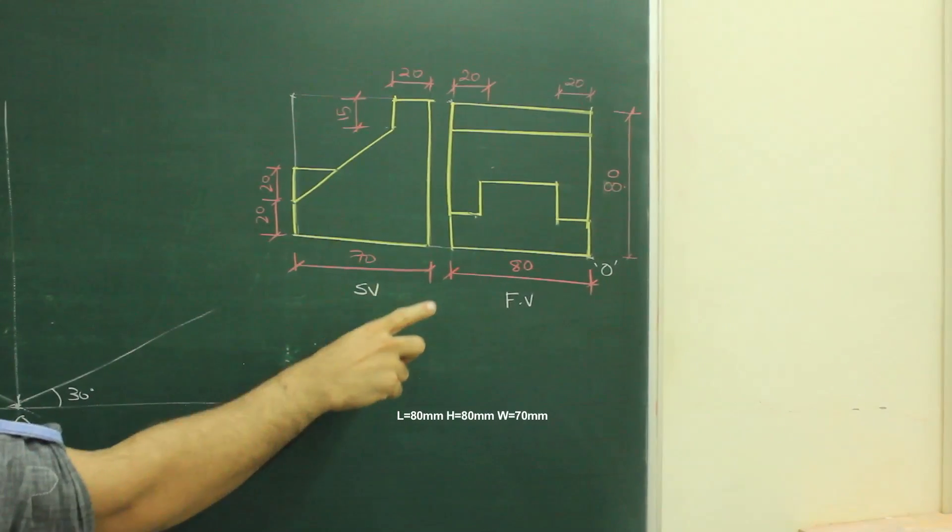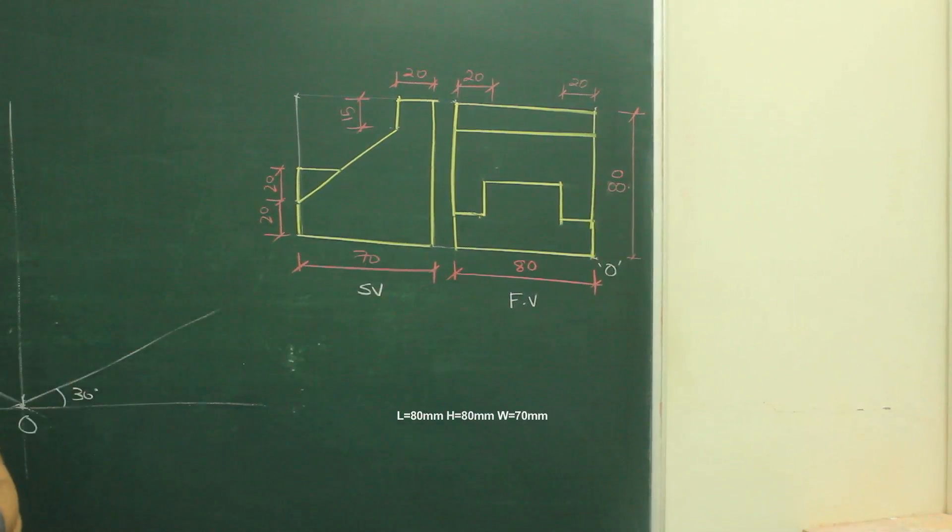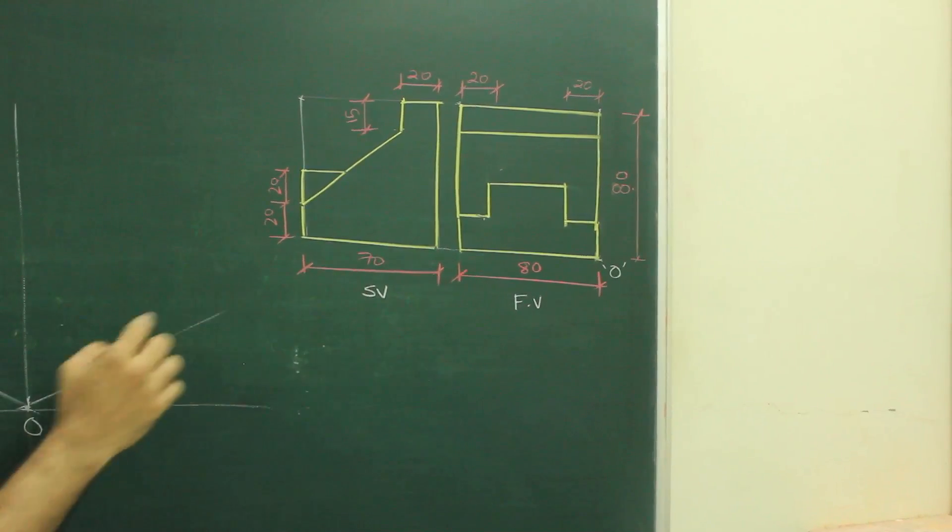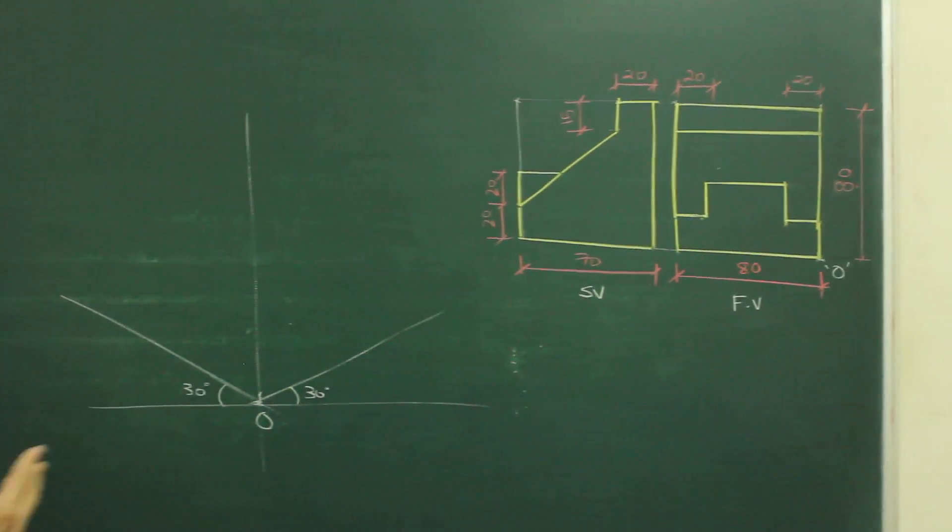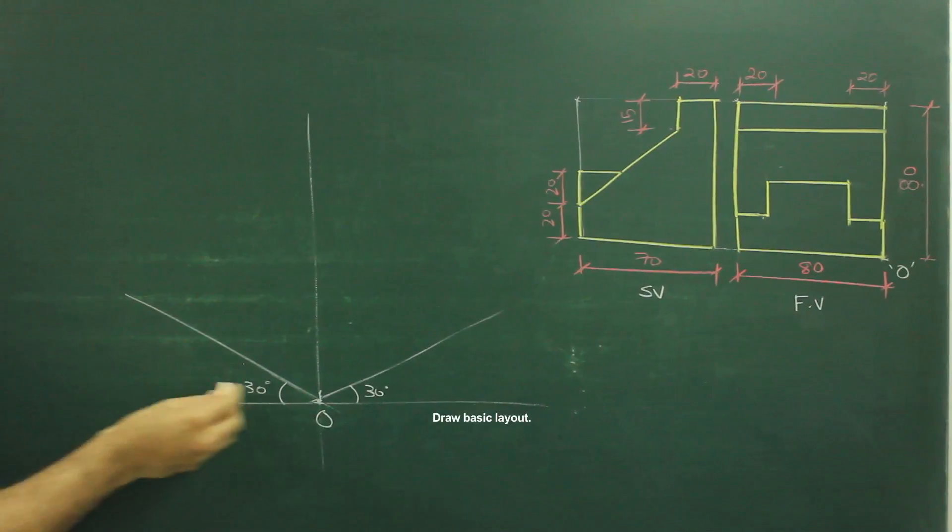In this sum, length is 80, height is 80 and width is 70. Now we will start with origin. We have given 80 on the left side of O, so we will cut 80 on this side.